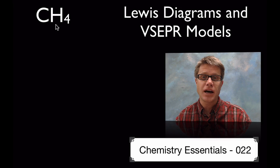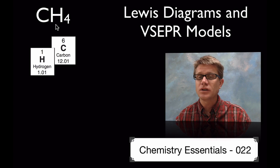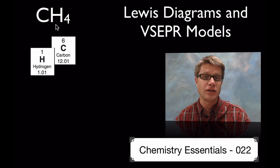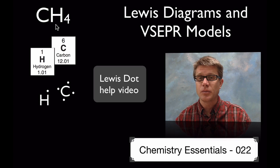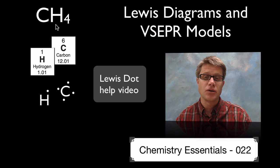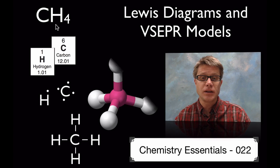This works great if we're looking at atoms that are bonded covalently and also in ions. So we could take methane for example, look at its constituent parts — carbon and hydrogen. We could figure out their Lewis dot diagrams, then create a Lewis structure, and finally create a VSEPR model.